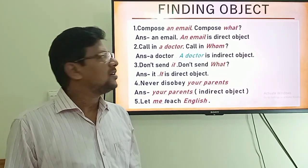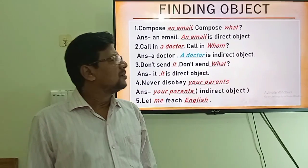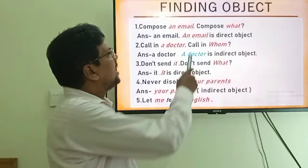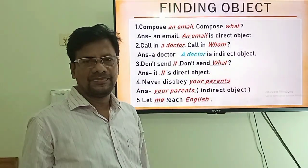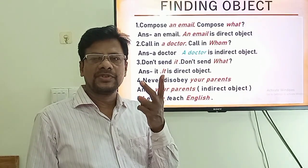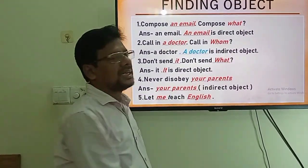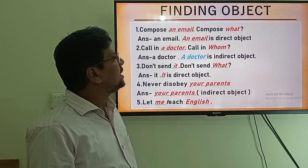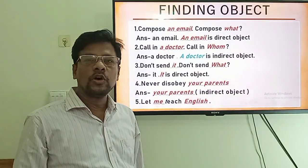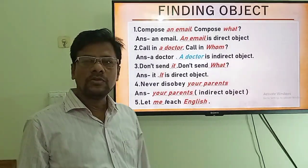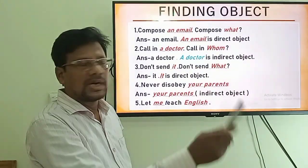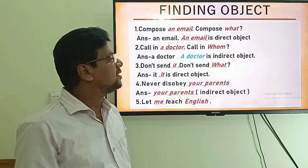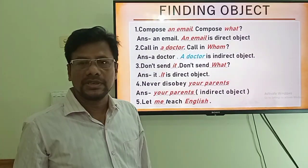We need to find out the objects. For example, 'Compose an email' — compose what? The answer is 'an email', so 'an email' is the object, and it is a direct object. There are two types of objects: direct object and indirect object. The object which is related to a non-person or non-living thing is the direct object. Number two: 'Call a doctor' — call whom? The answer is 'a doctor', so 'a doctor' is the object, and it is an indirect object, because 'doctor' is related to a person or living thing.